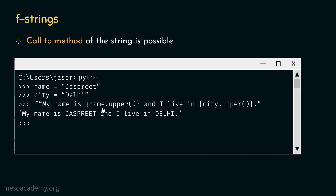We have variable name and we are calling the upper method of this variable. Since the variable is pointing to the string, we are eventually calling the upper method of the string. Similarly, city is pointing to Delhi, so we get these strings in uppercase, meaning each letter is now in uppercase.